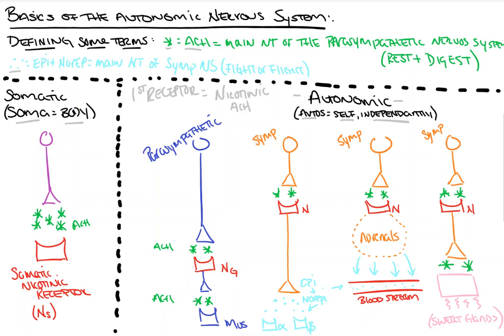If we take that point and look at the somatic nervous system here on the left, all we have to remember is that the somatic nervous system goes from the central nervous system directly to its receptor — directly to the muscle — which is where the somatic nicotinic receptors are. The pathway for the somatic nervous system is only acetylcholine interacting with its somatic nicotinic receptor. This is also why rocuronium and vecuronium and our paralytics all block here, but none of our other nicotinic receptors are somatic — that's why these paralytic agents don't paralyze the parts of the autonomic nervous system.